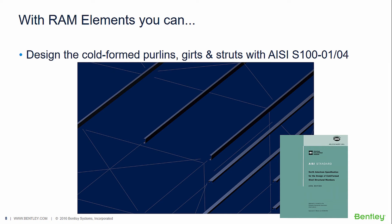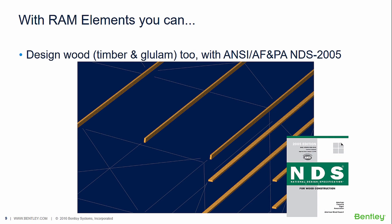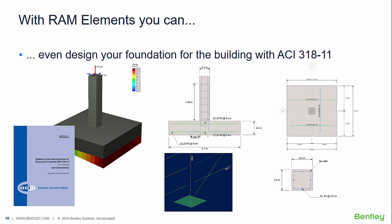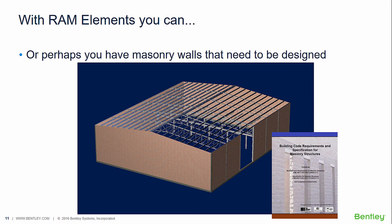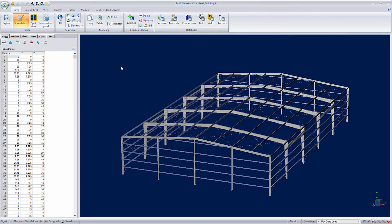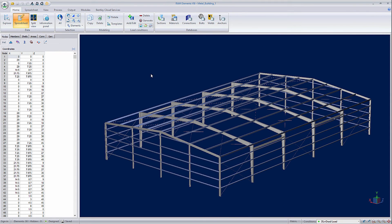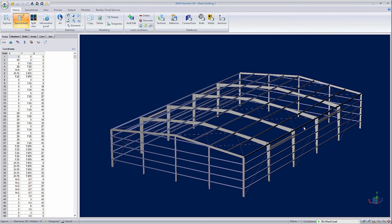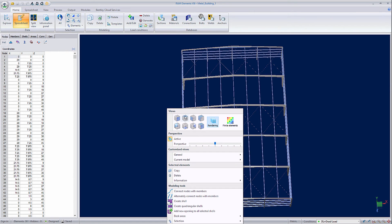Your secondary framing, which is normally specified with cold-formed Z and C shapes, can also be done with RAM Elements. However, if you use wood for your secondary framing, that would not be a problem when using RAM Elements. You can even design the footings for the columns and produce structural details of the same, all in the same run. Or perhaps you have a masonry wall that needs to be designed, and that wouldn't be a problem either. So as you can see, with RAM Elements you can design the complete building — everything from cold-formed members to tapered web members.